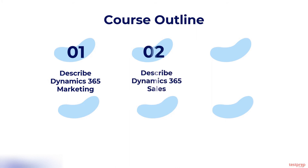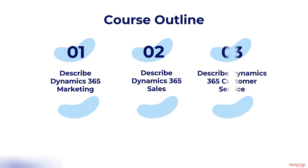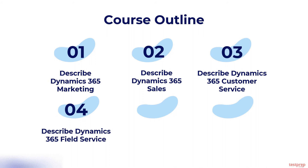The course outline covers six areas: first, describe Dynamics 365 Marketing; second, describe Dynamics 365 Sales; third, describe Dynamics 365 Customer Service; fourth, describe Dynamics 365 Field Service; fifth, describe Project Operations; and sixth, describe shared features.